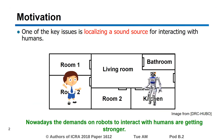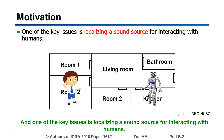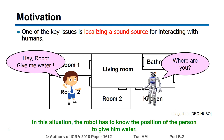Nowadays, the demands on robots to interact with humans are getting stronger. One of the key issues is localizing a sound source for interacting with humans. In this situation, the robot has to know the position of the person to give him water.